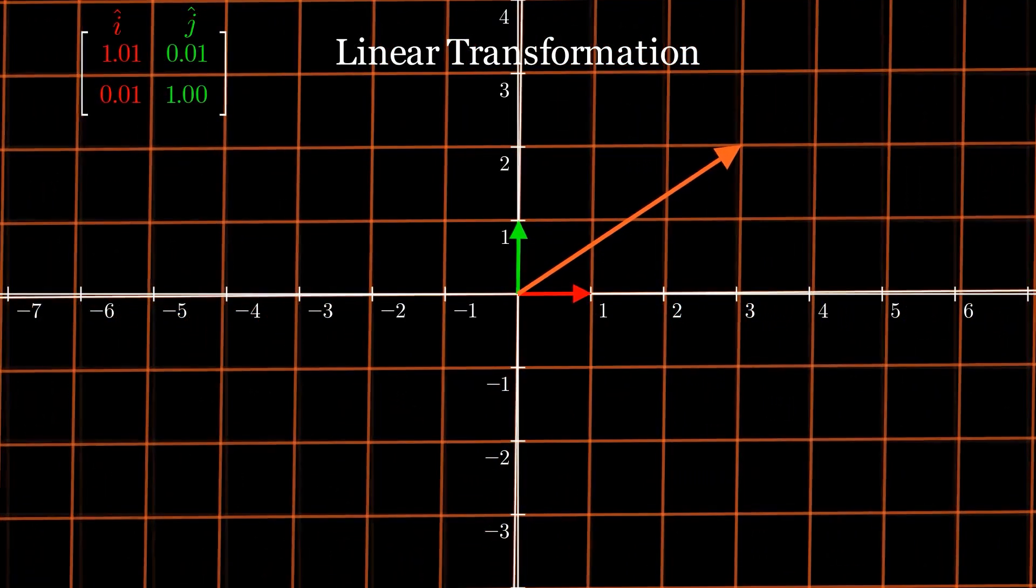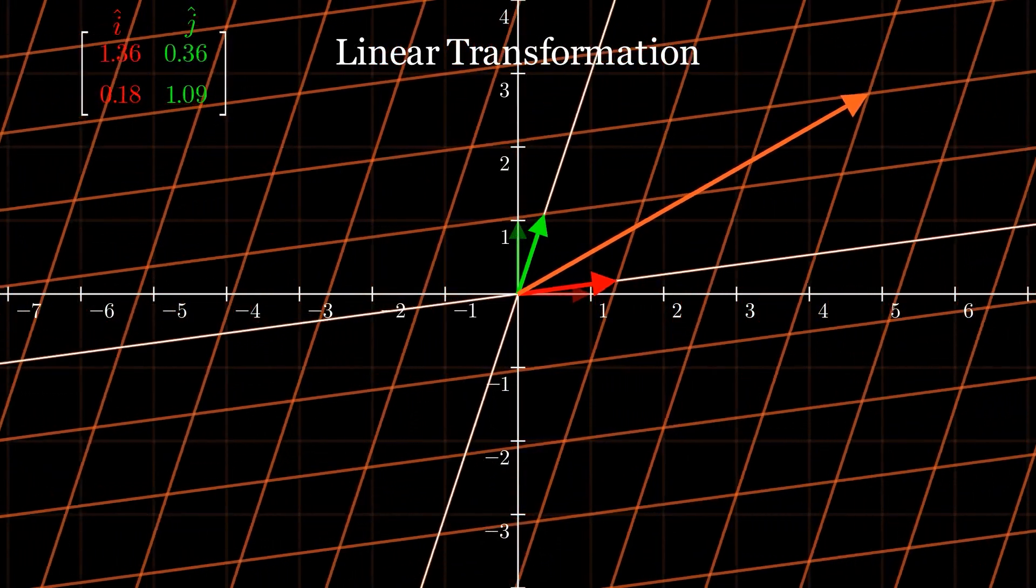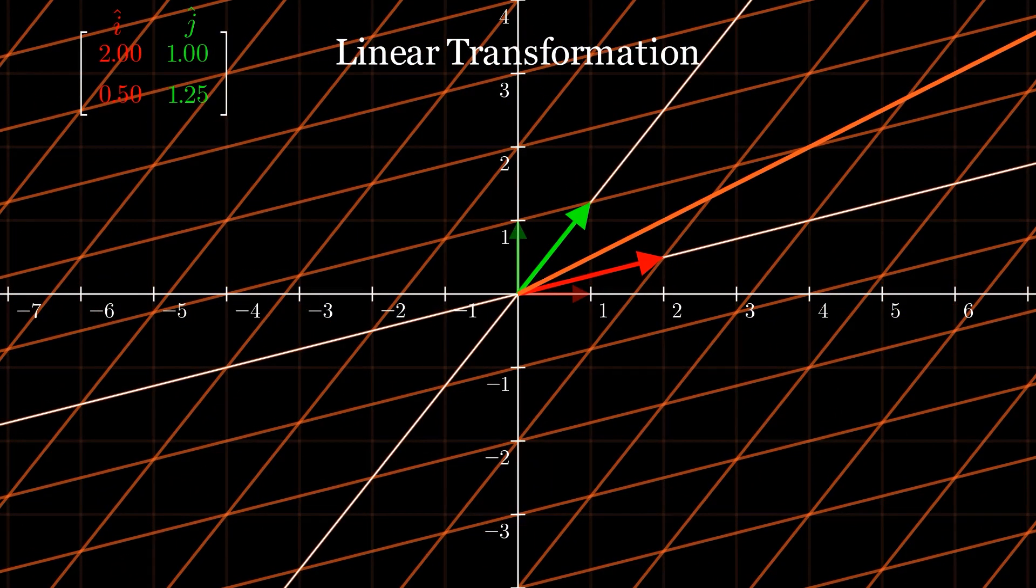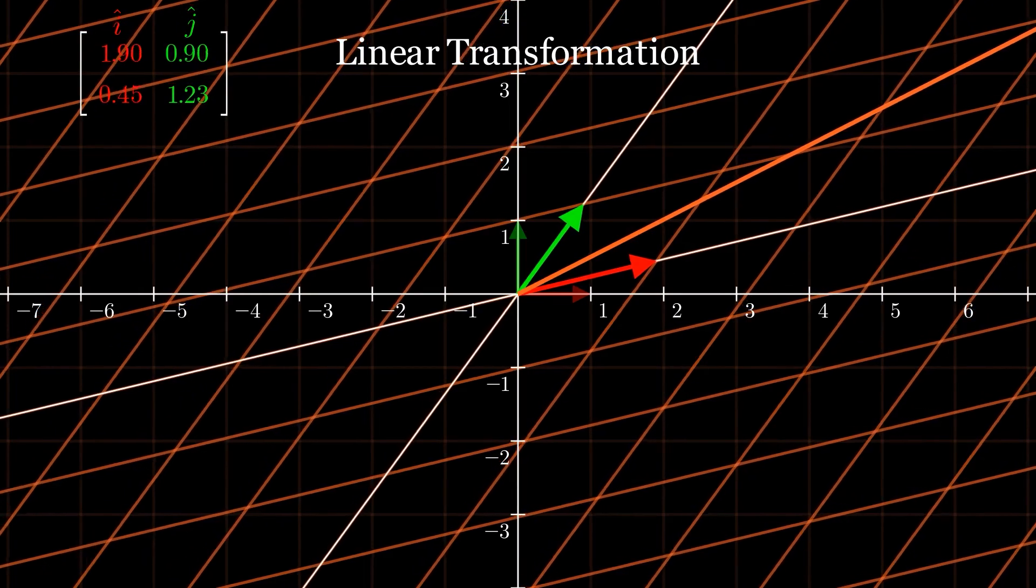A random linear transformation doesn't tell us much. So, let's break down what type of transformation each element of this matrix contributes towards.